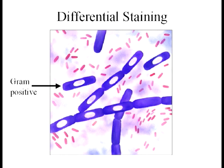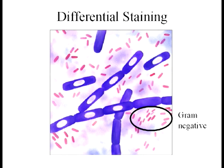In gram stain, the gram-positive bacteria are stained a purplish color, while the gram-negative bacteria are stained a pink or a red.